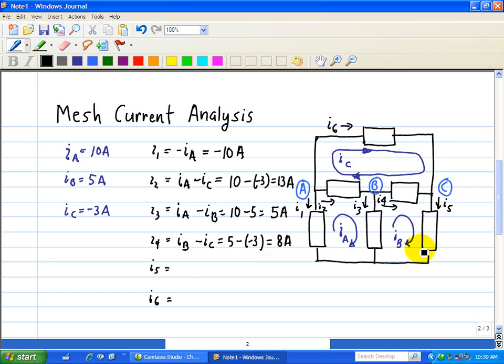I5 has only IB, and it's going in the same direction, so I5 equals IB, which equals 5 amps.